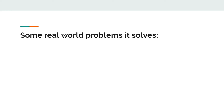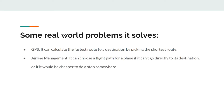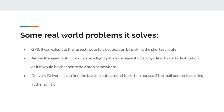Some real-world problems it solves: It can contribute to GPS — it can calculate the fastest route to a destination by picking the shortest route. This algorithm doesn't always work for efficiency, but it will try to choose the shortest route based on the weights of nearby nodes. It doesn't always work for long distances, but it'll pick the shortest route for nearby nodes. Airline management is the same idea — if it can't go directly to its destination, it might pick another route through another airport that might be cheaper. Delivery drivers too — it can find the fastest route to certain houses if, for example, the mail person is starting at the facility.